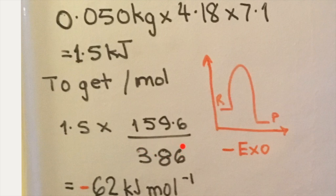So, converting 3.86 grams into the standard of one mole, we divide the molar mass of anhydrous copper sulfate by 3.86. We multiply that by 1.5 and we get 62 kilojoules per mole. Noting that we should say it's negative 62 because this is an exothermic process, one in which bond breaking consumed less energy and bond making released more energy.